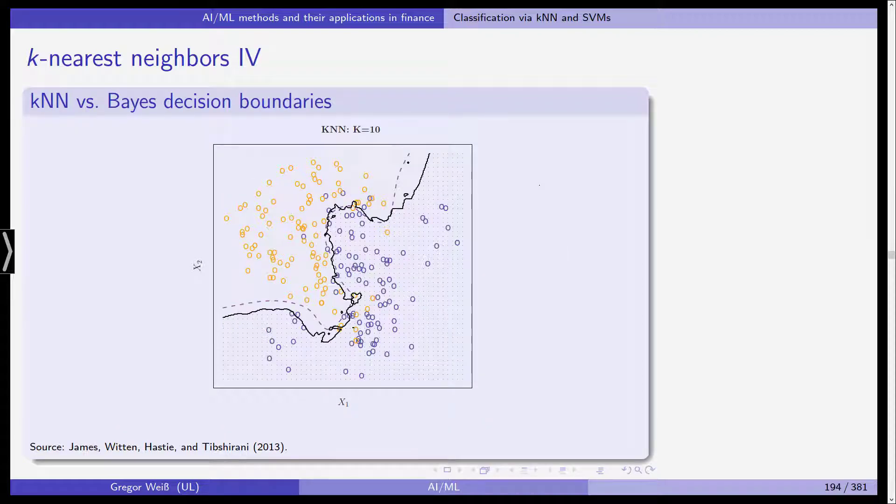So this is K-nearest neighbors. How does it compare to the Bayes decision boundary? You can see here we've used ten nearest neighbors, and you can still see the Bayes decision boundary in purple. It is a little bit more wiggly, as you can see here. It's close to the Bayes decision boundary, but it is a little more variant. It has more variance and less bias.